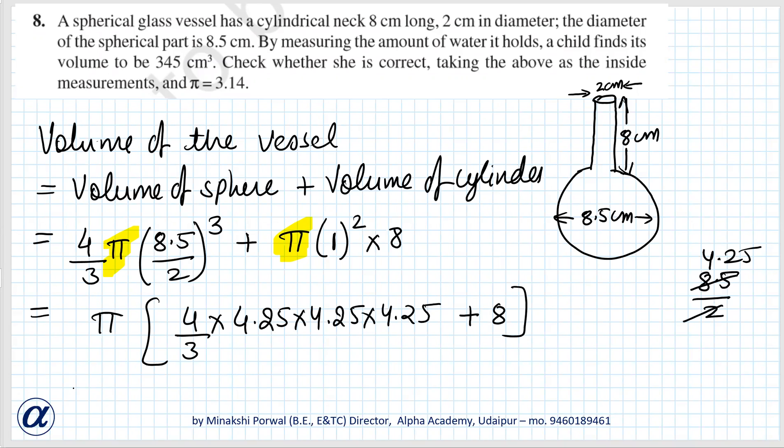This we have to solve. 3.14 for π we have to substitute. Now this calculation. 4 × 4.25 × 4.25 × 4.25 divided by 3, that is equal to 102.35 plus 8.